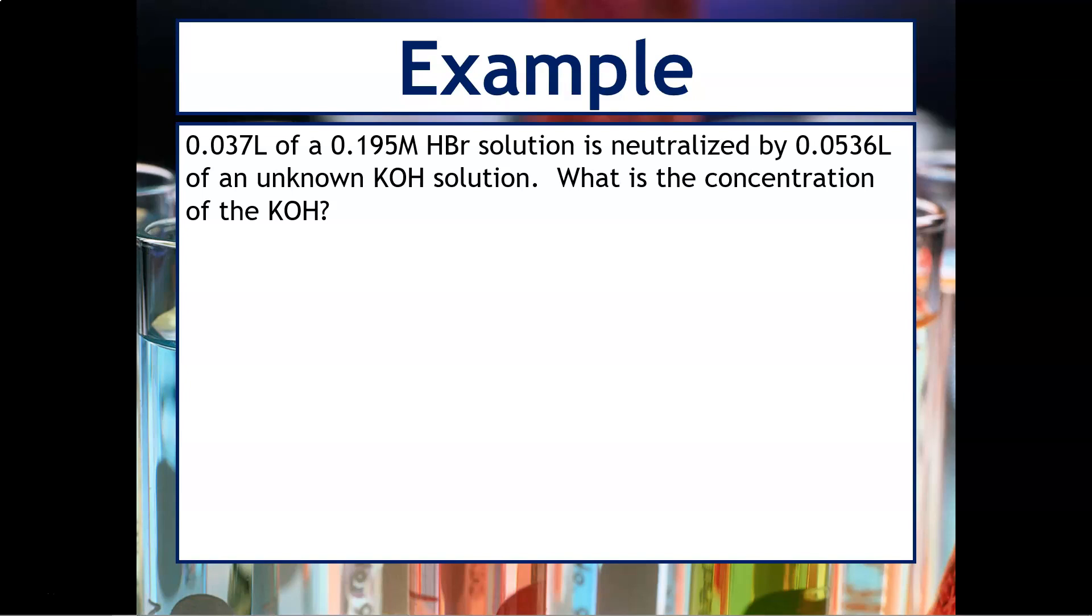Let's do another one. So we've got 0.037 liters of a 0.195 molar hydrobromic acid solution. And you're told that it's neutralized by 0.0536 liter of an unknown potassium hydroxide solution. What is the concentration of the potassium hydroxide? So again, we're going to write our equation just like usual and then balance it. The next thing we're going to do is extract the information from the problem. So under the hydrobromic acid, I'm going to write the volume and the concentration. And then underneath the KOH, I'm going to write the volume and the unknown molarity is what I'm looking for.